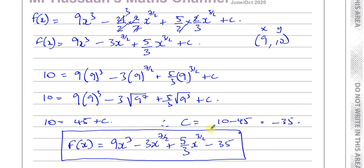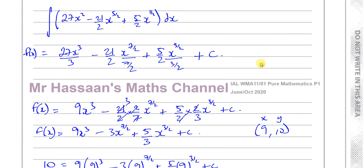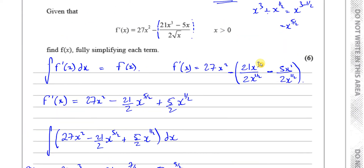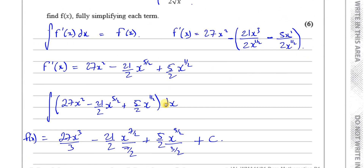That's the end of paper 1, P1 of the June/October 2020 International A-Level Edexcel paper. Other questions from this paper can be found in the playlist, and there's also a playlist all about integration from P1. You can subscribe to my channel by clicking the icon, and on the card at the top you'll find a link to another P1 paper. Thank you for watching.